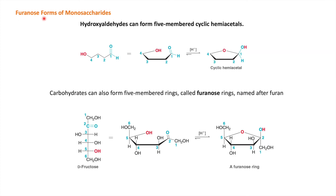Now we will study the furanose form of monosaccharides. Here we have a hydroxy aldehyde. When the hydroxyl group reacts on carbon 1, it gives you the cyclic hemiacetal form — a five-membered ring containing oxygen. This five-membered ring containing oxygen is called the furan ring, and from furan the name furanose comes.